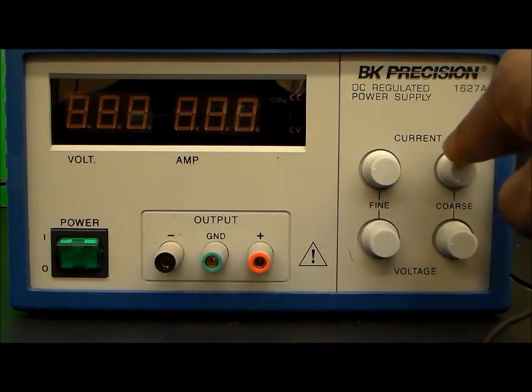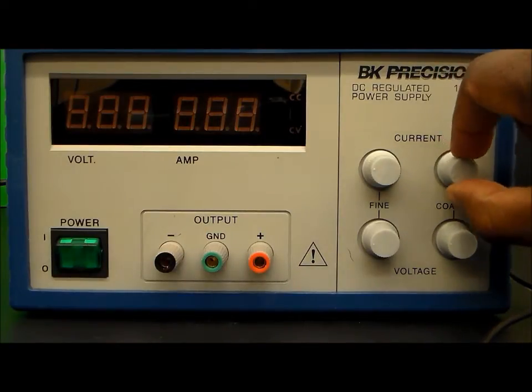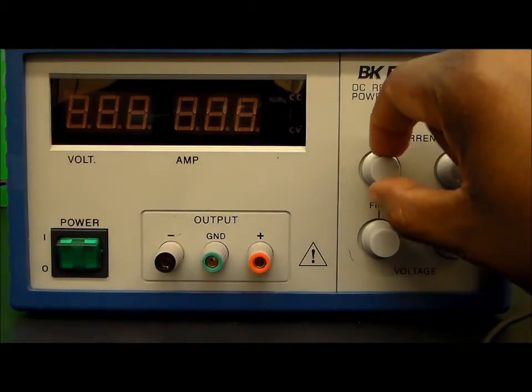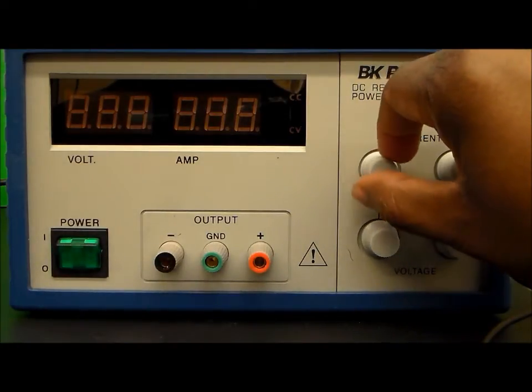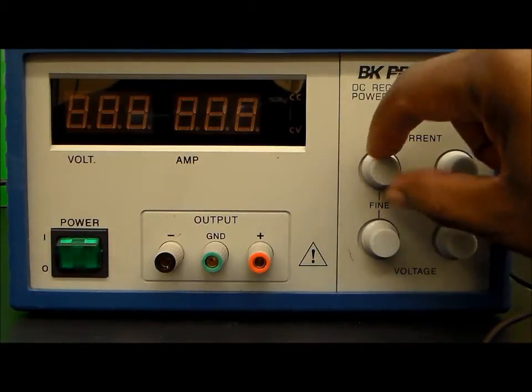If we want to move the current up in large increments, we would use the right knob over here in order to move it up in large increments. If we want to move it up in smaller increments, we use this knob that's over here for the current, fine increments.